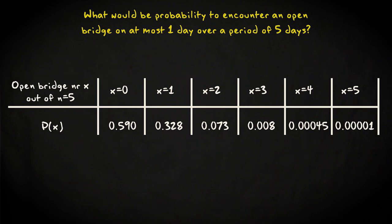Here, we can make good use of the probability table that was just created. We are looking for the total probability of the case where the bridge was never open, or open on just 1 day, so the sum of these two probabilities, which is 0.92.